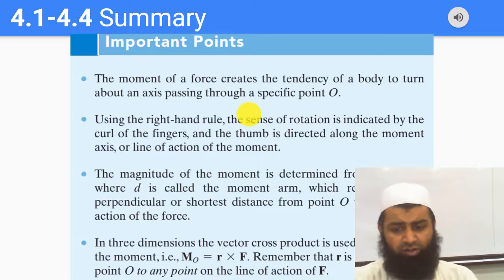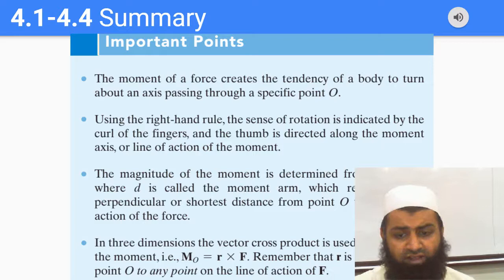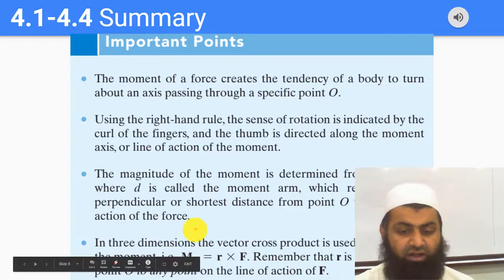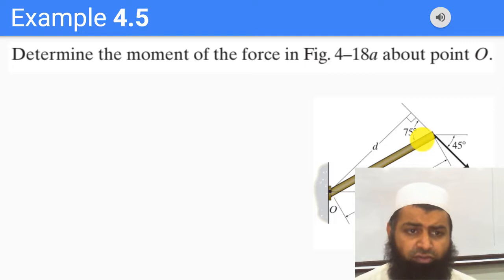Here are the important points of everything covered so far. First, the moment of a force is the tendency of the force to rotate a body. We looked at the definition of the moment using F times d, where d is the perpendicular distance to the point O. We also learned the moment of a force in vector form, which is given by vector R cross vector F.